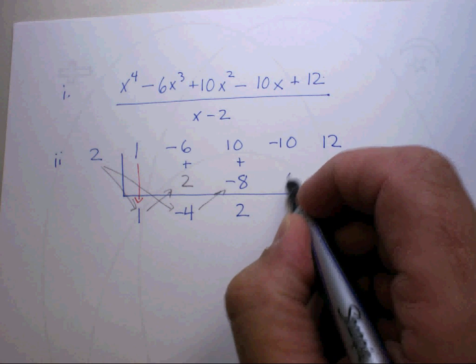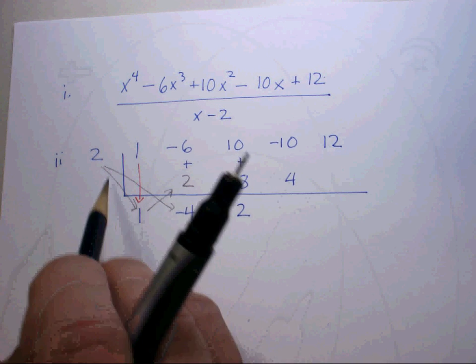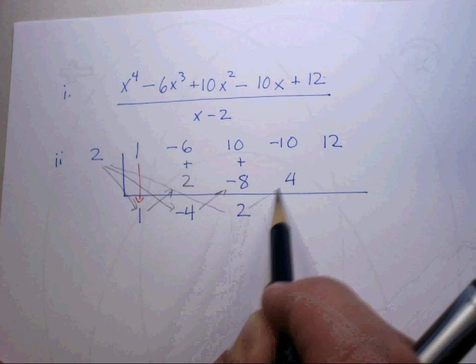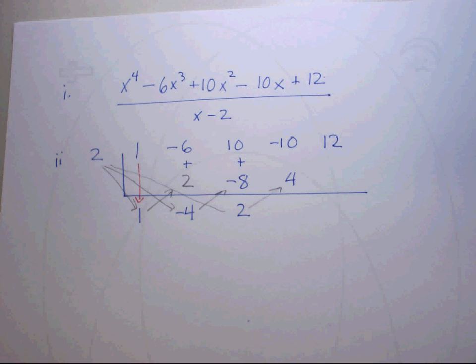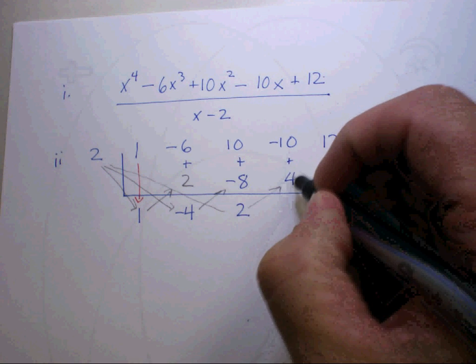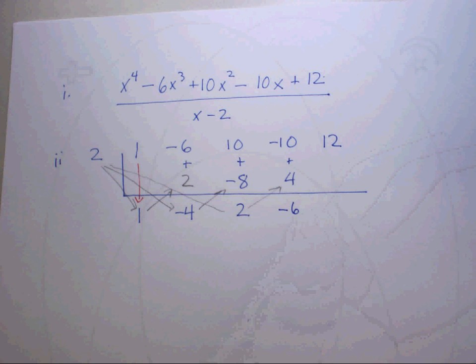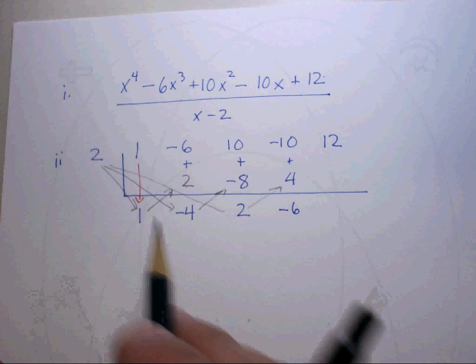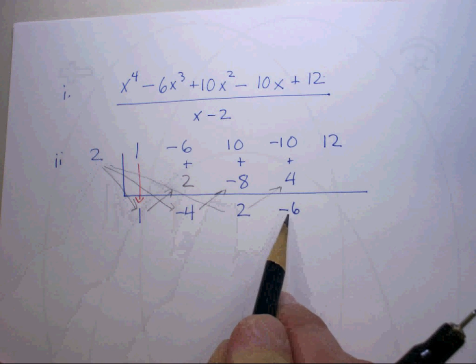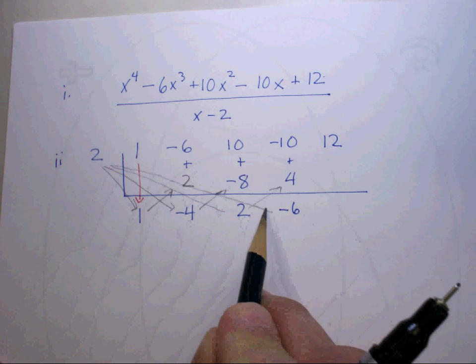Let's continue. 2 times 2 will give you 4. You put the 4 there. Basically, it's just like a little bounce going on there. You add these two numbers and you get negative 6.